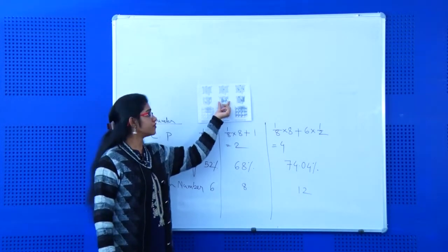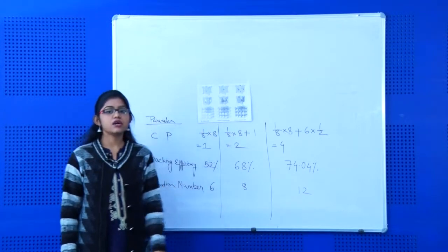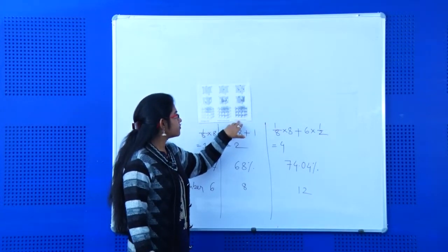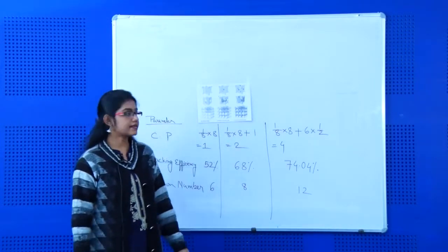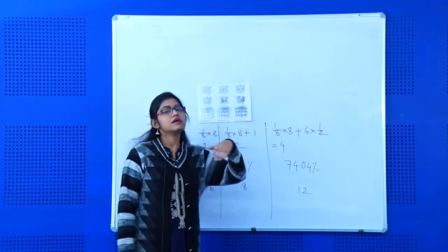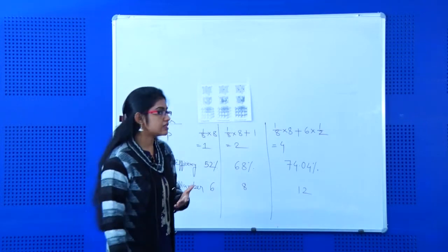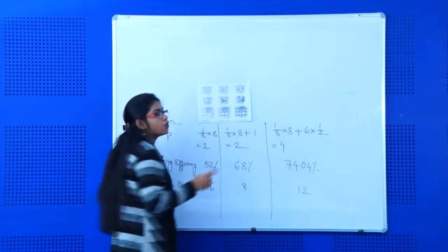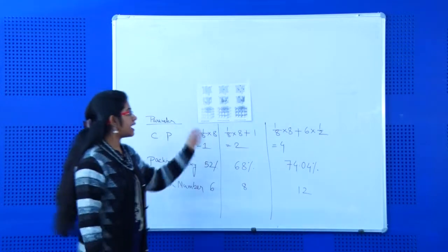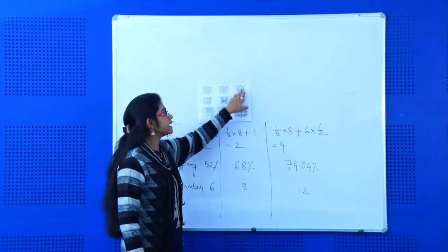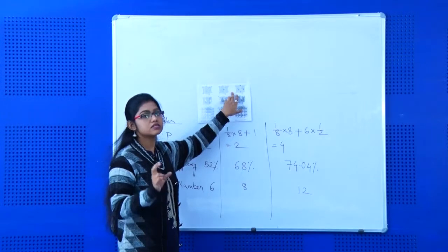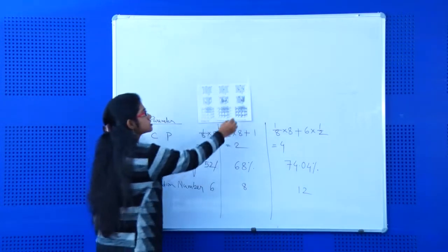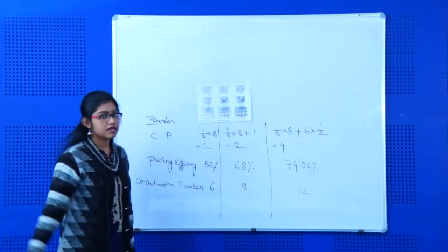In the same manner, for face centered cubic — in any cubic there are six faces, so all the faces will contain one constituent particle. Along with that, there are a total of eight corners, so eight constituent particles will be at the eight corners. This is the cross-section view of FCC.